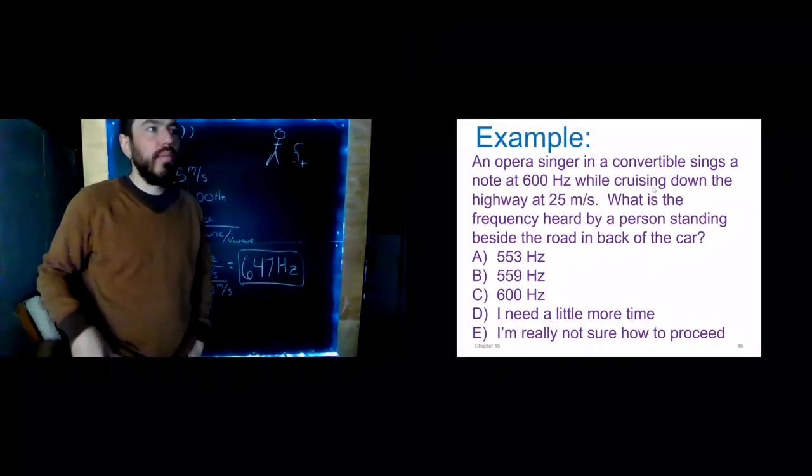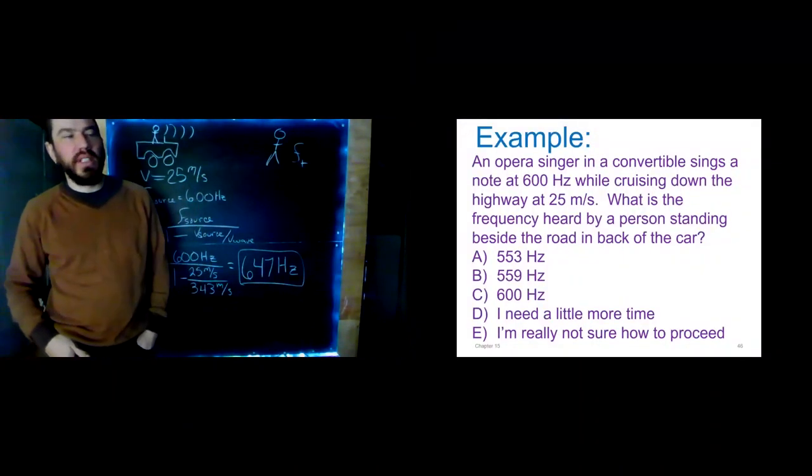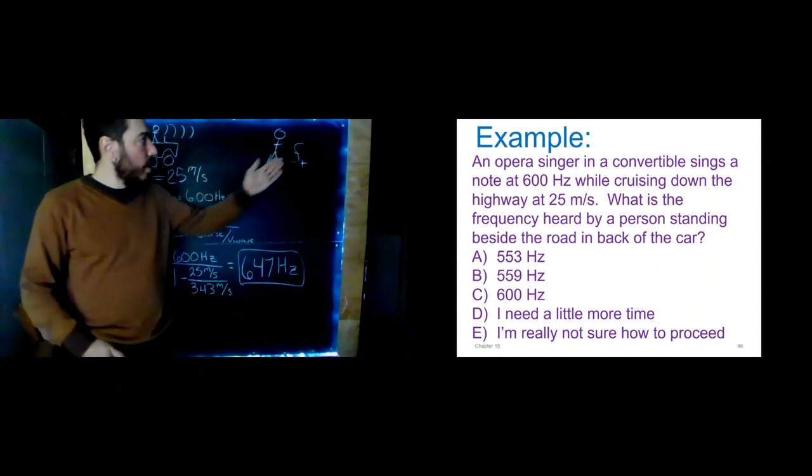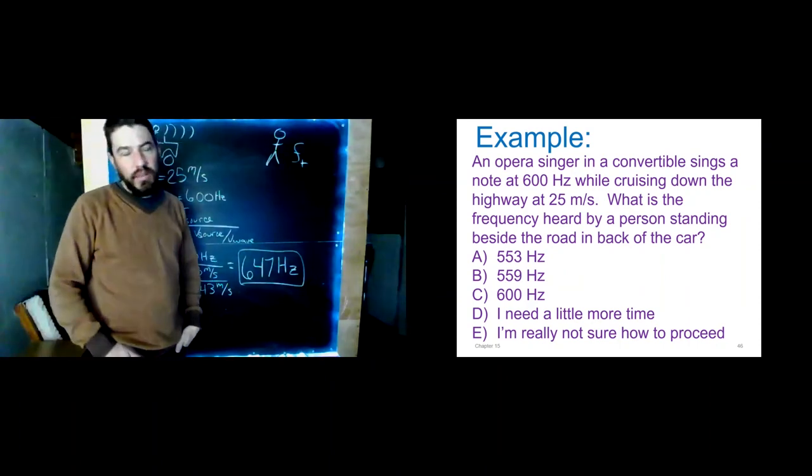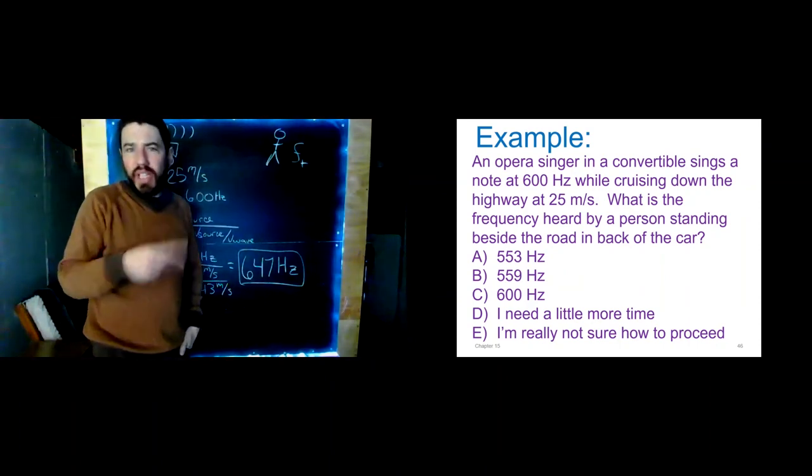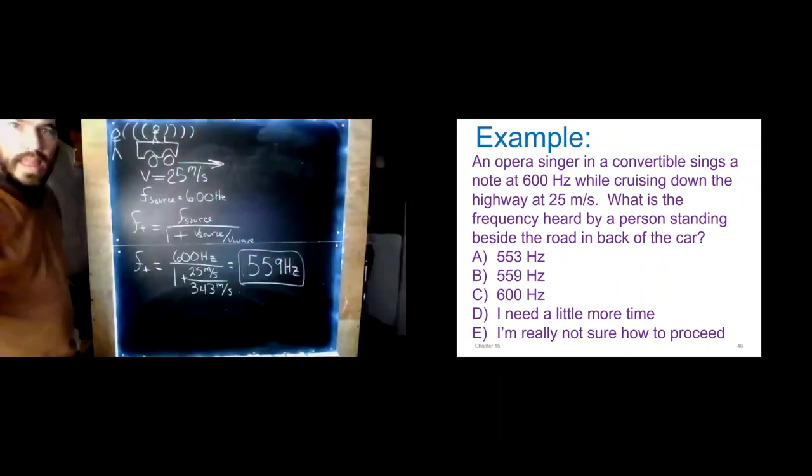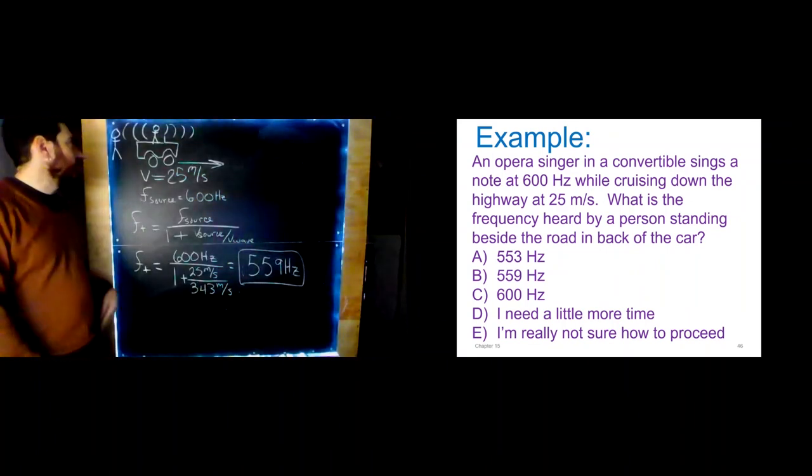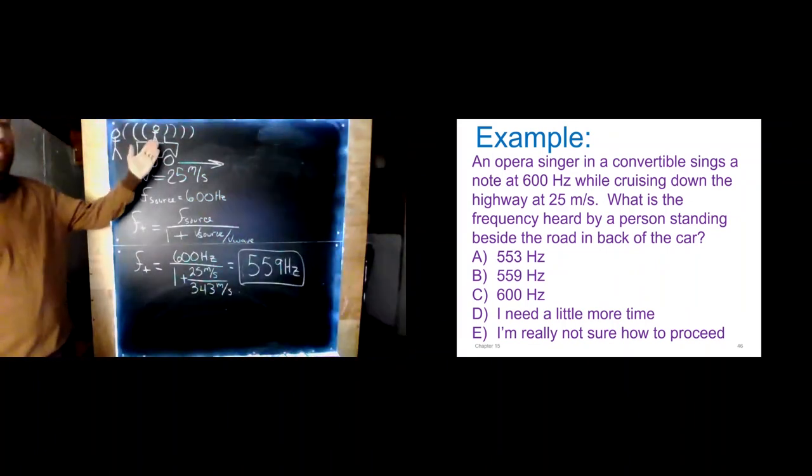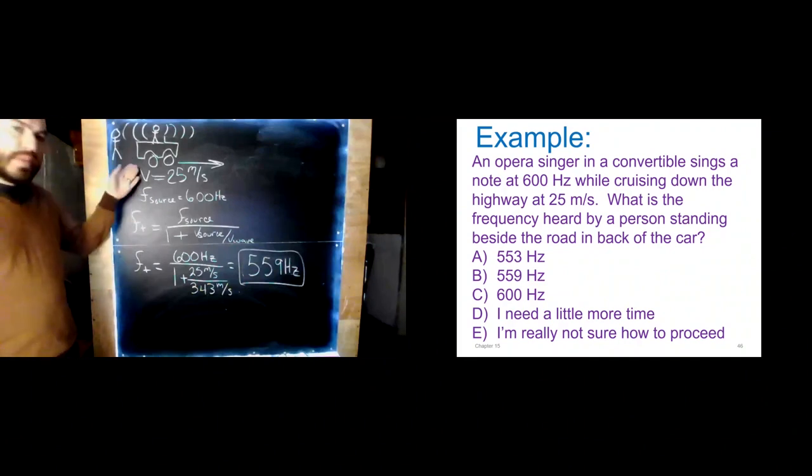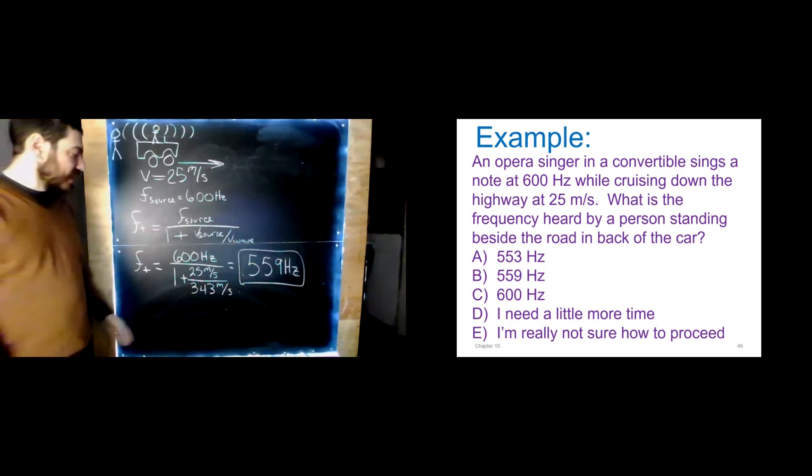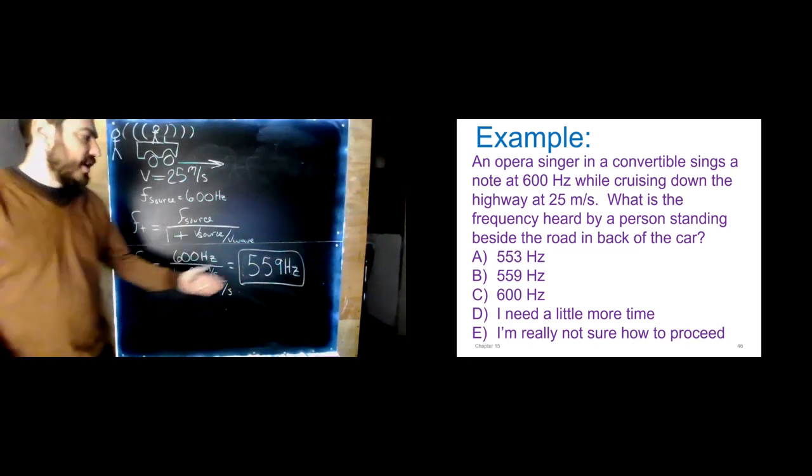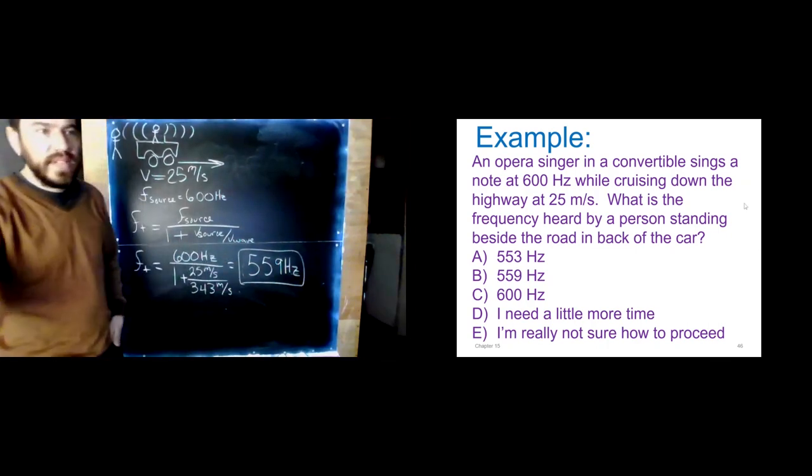Oh, here's one for you to try. An opera singer in a convertible sings a note at 600 hertz. It's the same situation. What if this person was standing behind the opera singer instead? Why don't you go ahead and pause the video and give it a shot? I'll do the solution next. Well, the only difference here is now my person standing behind the opera singer instead of in front. We pick out our different equation. The only difference between the equations is this becomes plus instead of minus. And same numbers. We calculate it out. We get 559 hertz.